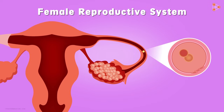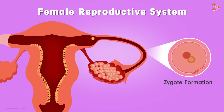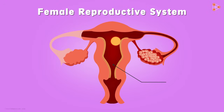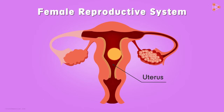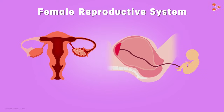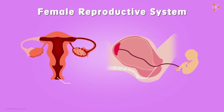From here, the zygote starts dividing and grows into an embryo. Now where will this embryo go further? The uterus. We know that the uterus, commonly referred to as the womb, is the site of development of a baby. And when the growth of the baby is completed, it comes out of the mother's body through the vagina.